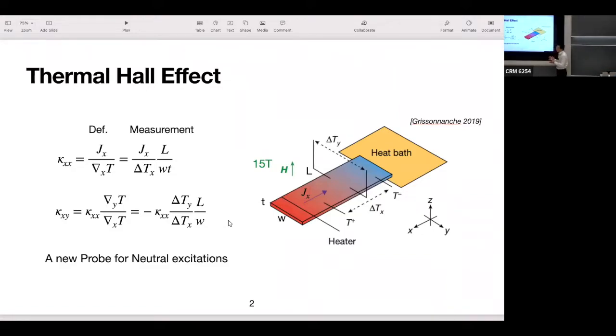Thermal Hall effect is really similar to electrical Hall effect. So you have a similar device, you put a B-field in the z-direction, let's say 15 tesla. In electrical Hall effect, you send electrical currents in the x-direction, and you detect a voltage difference in the y-direction.